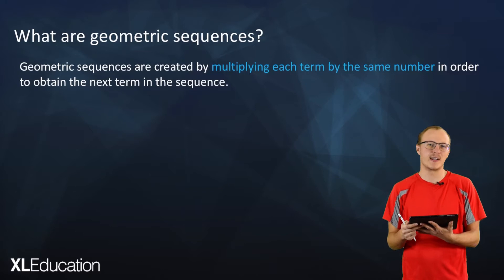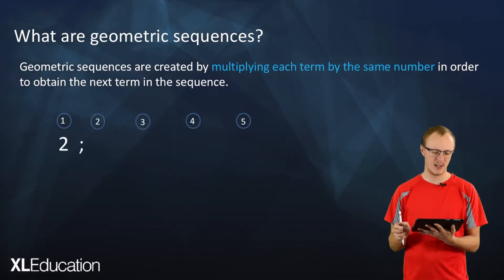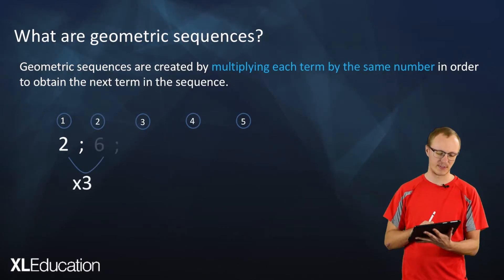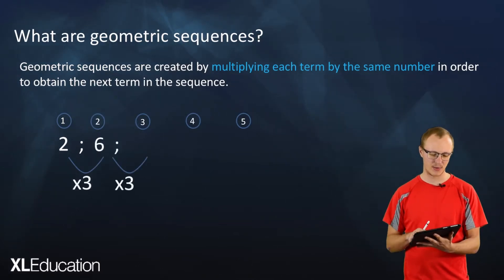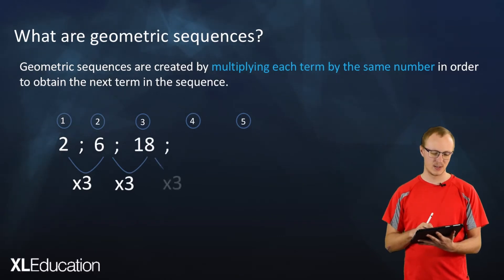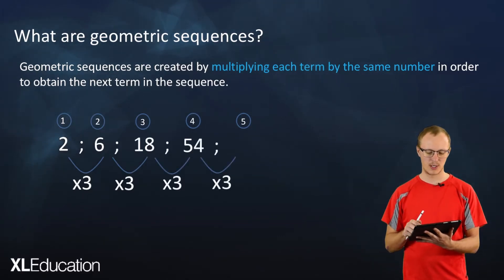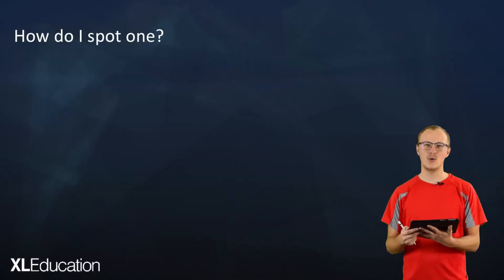So let's make our own geometric sequence. Let's start with 2 and multiply by 3 in order to get to the next term, so we get 6. Multiplied by 3 you get 18, multiplied by 3 you get 54, multiplied by 3 you get 162. So there we have it, we've created our very own geometric sequence.